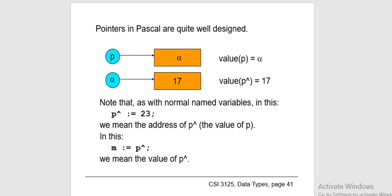Other pointer types in C include: far pointer, dangling pointer, huge pointer, near pointer, normal pointer, and file pointer. The size of a pointer in C is the same for every pointer type. It does not depend on the type it is pointing to — it only depends on the operating system and CPU architecture. The size is 8 bytes for a 64-bit system and 4 bytes for a 32-bit system. We can find the size of a pointer using the sizeof operator.